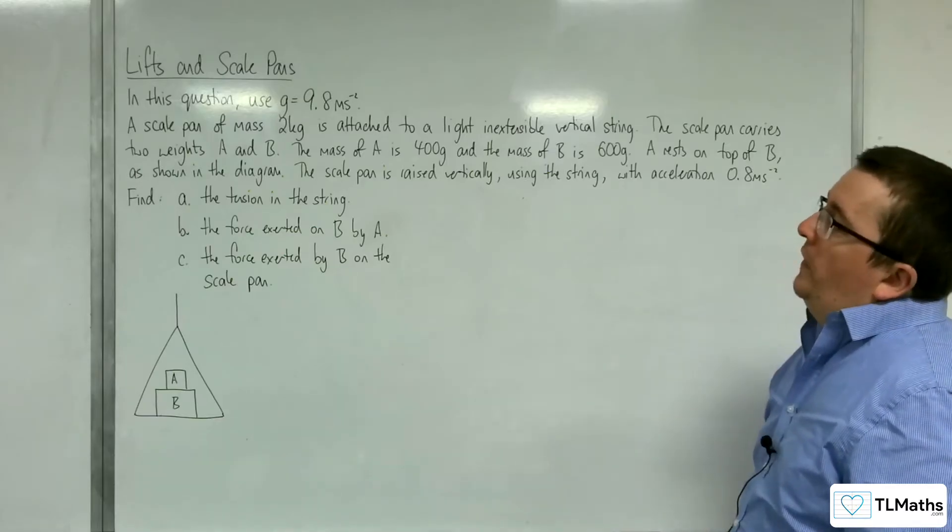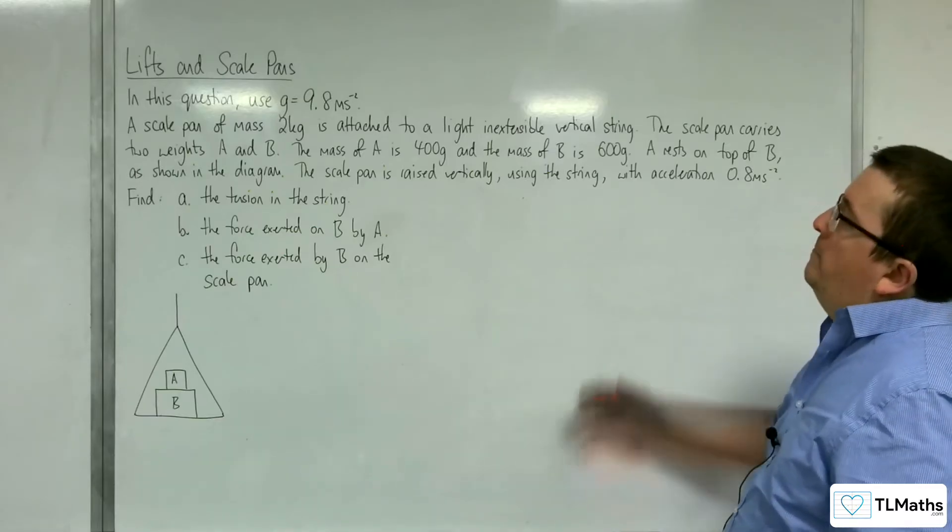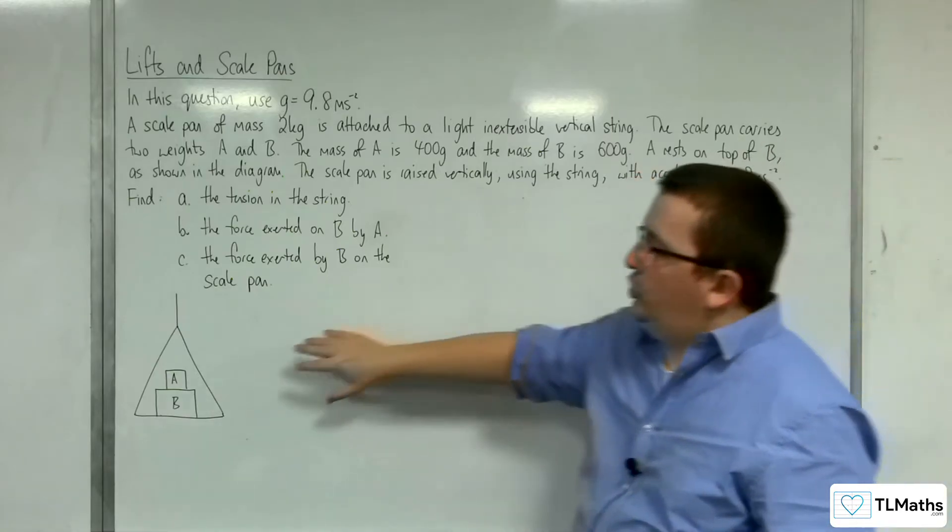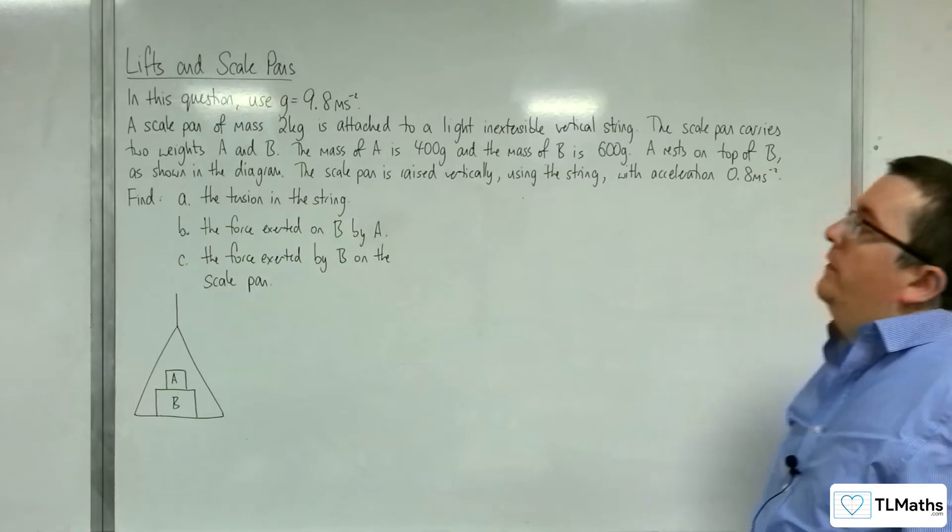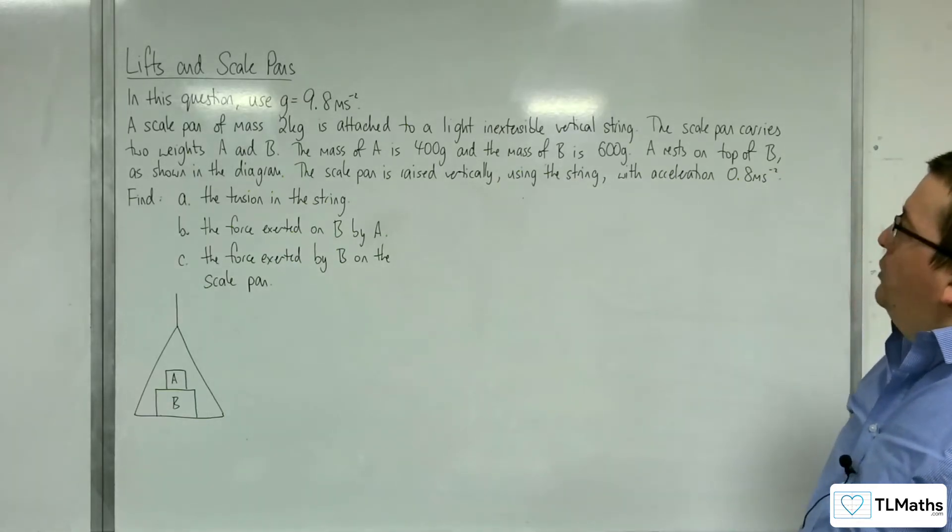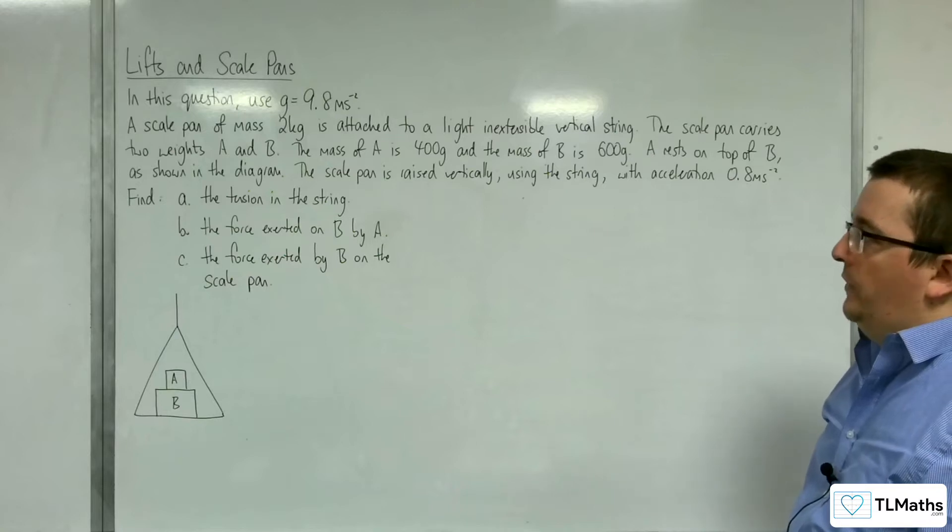The scale pan carries two weights, A and B. The mass of A is 400 grams, and the mass of B is 600 grams. A rests on top of B, as shown in the diagram. The scale pan is raised vertically using the string, with acceleration 0.8 metres per second per second.